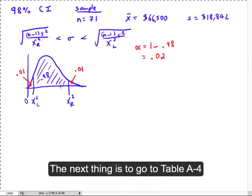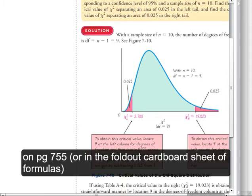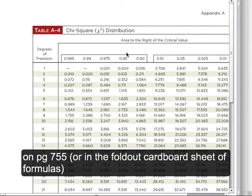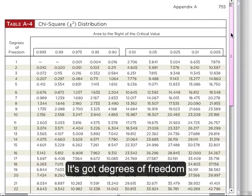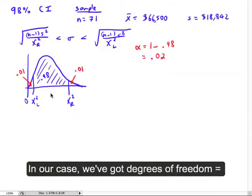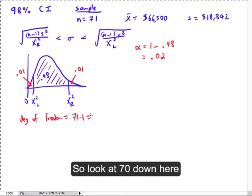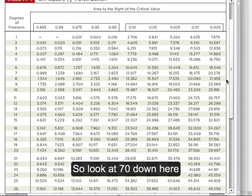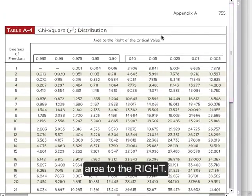Now that we have our picture, the next thing is to go to the table. It's table A4 in your book, way in the back on page 755. If you take a look at it, it's got degrees of freedom on the left. And that's n minus 1. So in our case, we've got degrees of freedom is 71 minus 1, which is 70. So we're going to be looking at 70 down here in the table.